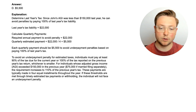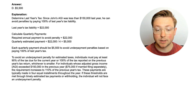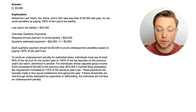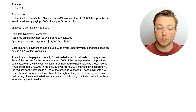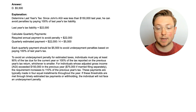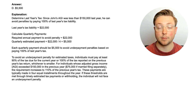To avoid an underpayment penalty for estimated taxes, individuals must pay at least 90% of the tax due for the current year, or 100% of the tax reported on the previous year's tax return, whichever is smaller. For individuals whose AGI exceeded $150,000, it's either 90% of the current year or 110% of the previous year's tax. These payments are typically made in four equal installments throughout the year, and if these thresholds are met through timely payments or withholding, the individual will not face an underpayment penalty.